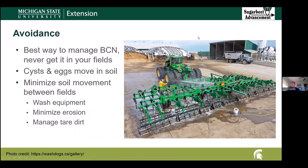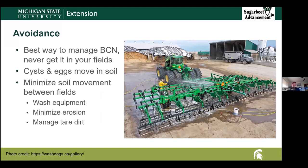Now I'm going to shift to talking about the management practices for sugar beet cyst nematode. Really, the very best management practice for this pest is to avoid it. Beet cyst nematode — the cysts and the eggs — move in soil, so what you really want to focus on is minimizing soil movement between fields. Probably the most important step here is to wash equipment, especially if you're buying new equipment and bringing it to your farm for the first time, or if you've worked infected fields and are moving to uninfected fields. In fact, one study looking at soybean cyst nematode found that on just the tooth of a field cultivator, the dirt collected there alone contained 125,000 eggs of soybean cyst nematode. So you can really move a lot of nematode eggs in not a whole lot of dirt.